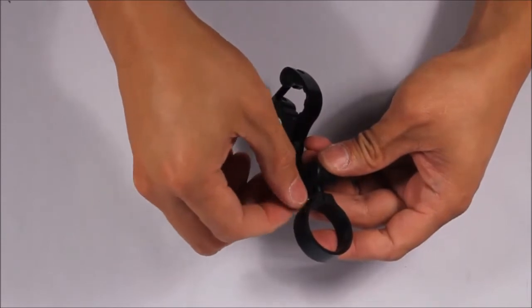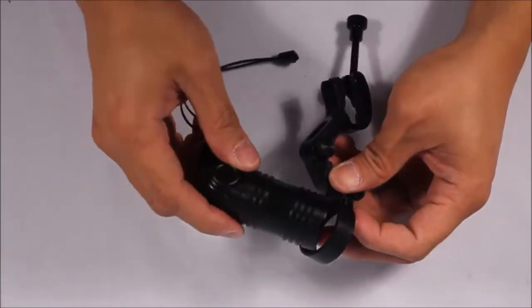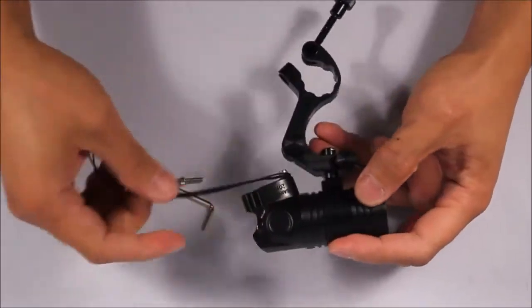To install the NERD2, first use the included hex key to remove the collar screw. Slip the NERD2 into the collar and reinstall the screw.